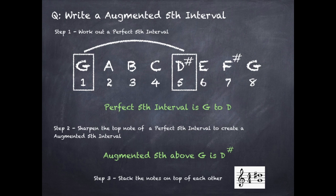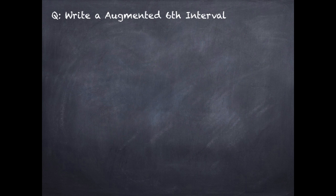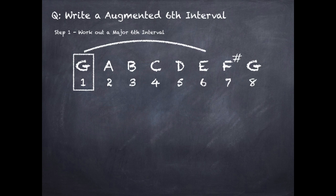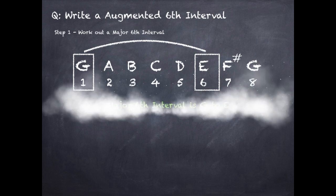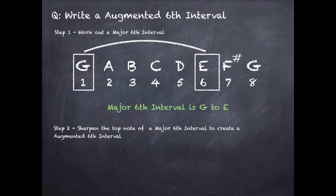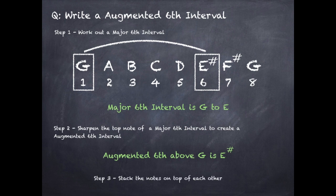You can see a pattern emerging. To write an augmented sixth interval, we first need to work out a major sixth interval. We go from the first note of our major scale, which is G, to the sixth note, which is E. So a major sixth is G to E. Step two: sharpen the top note to create an augmented sixth, so E becomes E sharp. Our augmented sixth interval is G to E sharp. Step three: stack the notes on top of each other in the stave.